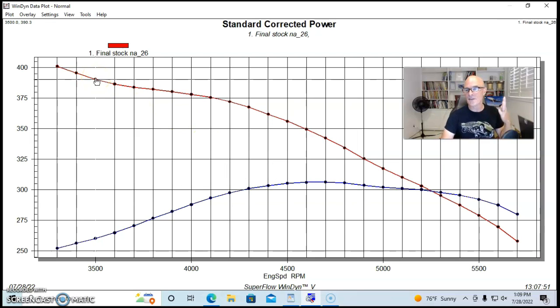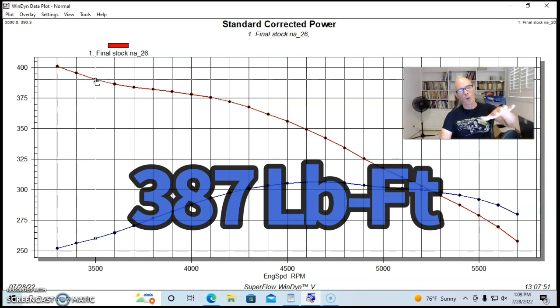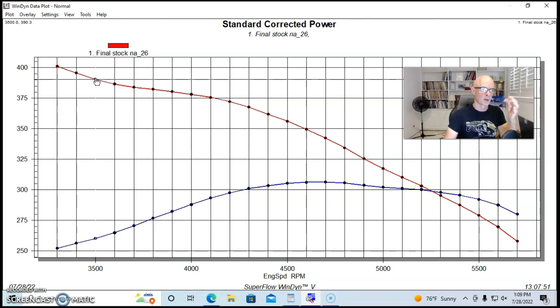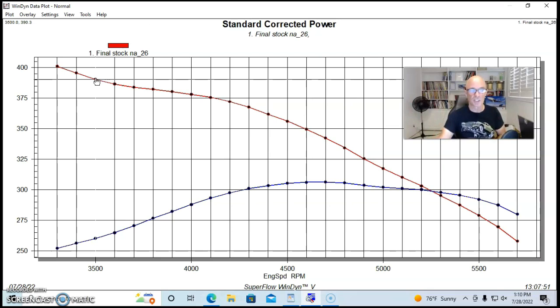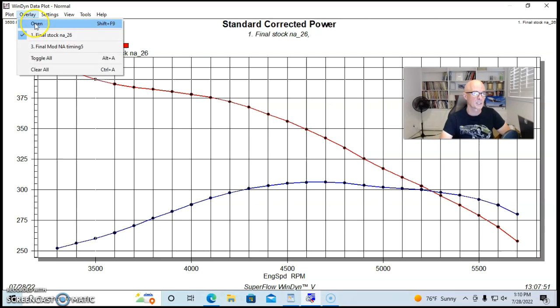Our 347 was run with a GT40, 65 millimeter throttle body, stock E7TE heads, and stock HO camshaft with long tube headers. The 347 produced 306 horsepower and depending on where you want to measure, 385 or 390 foot-pounds of torque. The 400 number is probably an anomaly, that's just the load-in point.